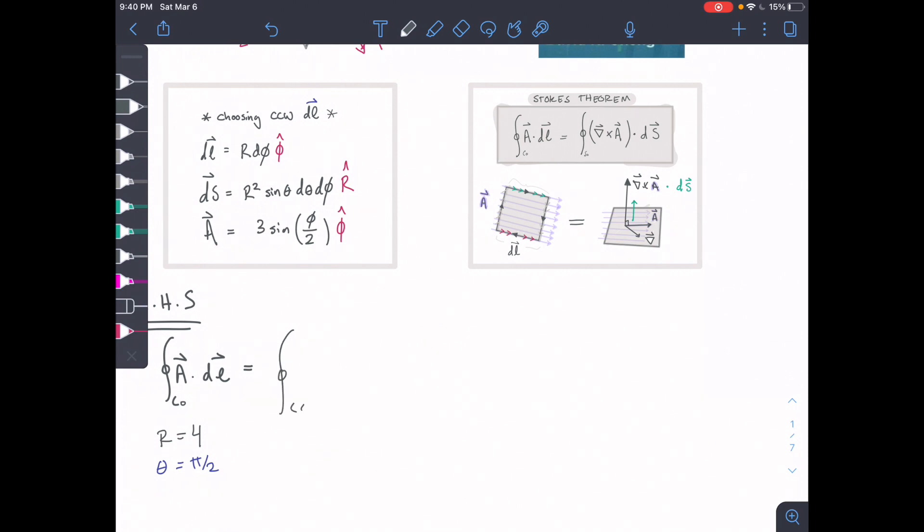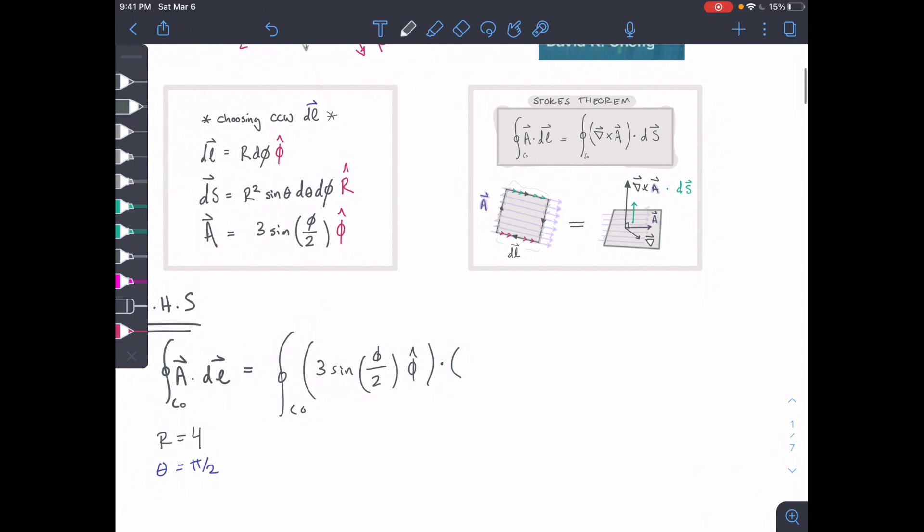Our A vector is 3 sine of phi over 2 in the phi hat direction. And then we are multiplying that by our DL, which we have right up here. That is R d phi in the phi hat direction.